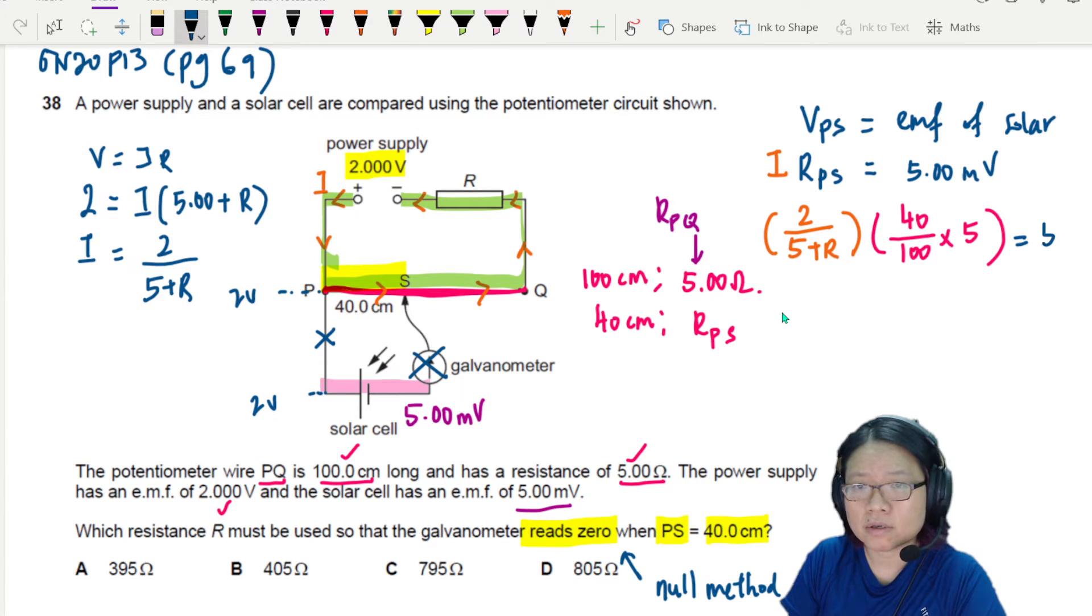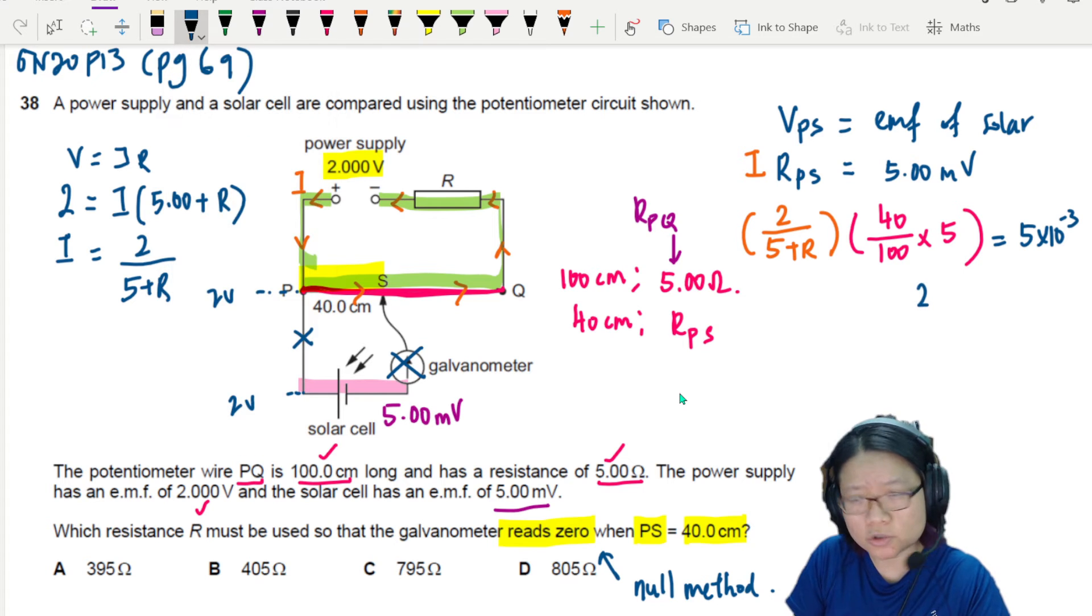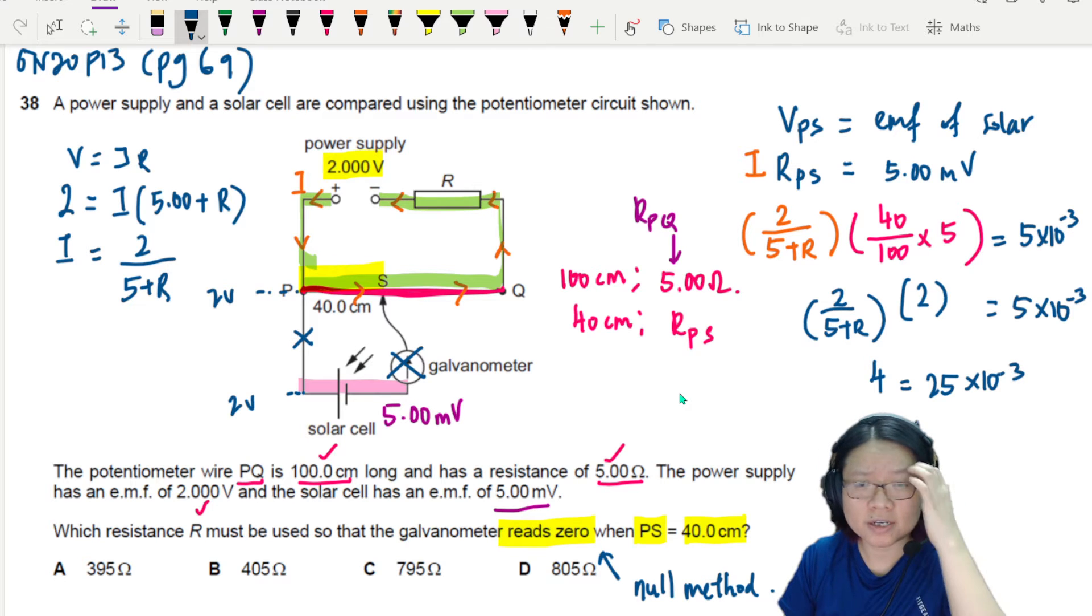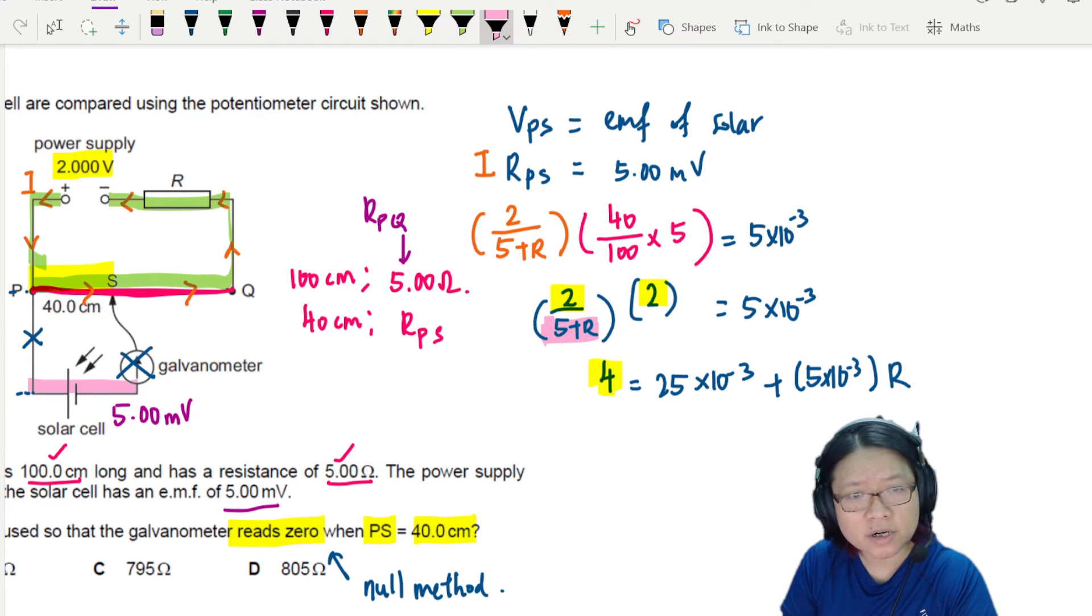So this one will be 5 millivolts equals 5 times 10 to the power of negative 3. I'm going to calculate the resistance of PS first. That would give me 2. This is 2Ω. You can use the ratio as well. And then here would be 2 over 5 plus R. So this would be 5 times 10 to the power of negative 3. So I'll cross-multiply. 4 here is equal to 5 times 5, 25 times 10 to the power of negative 3, plus 5 times 10 to the power of negative 3 R.